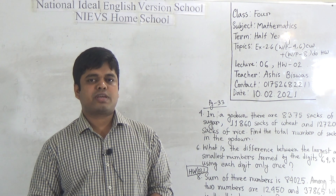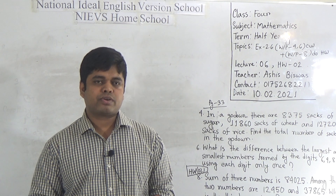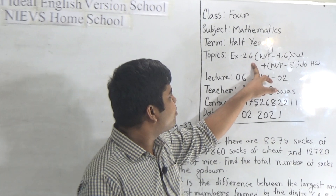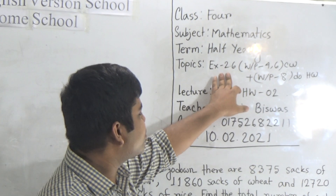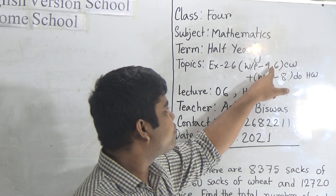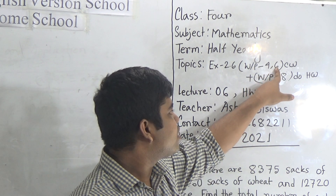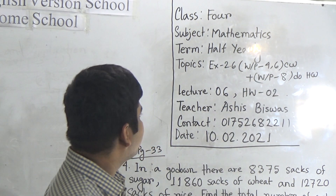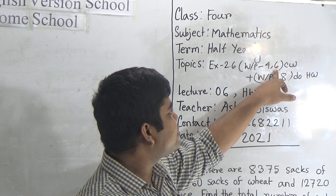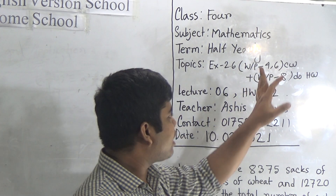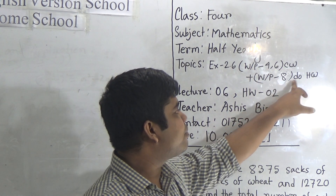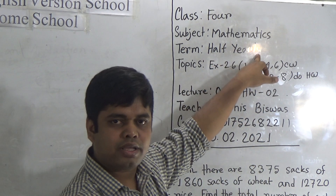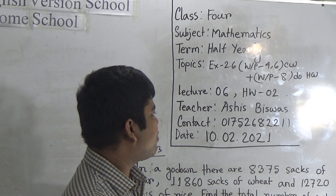Today, I am going to take a math class for the students of class 4. Our today's topic is exercise 2.6. From these topics, we shall solve odd problem number 4 and odd problem number 6. Quiz is taken from page number 33. Odd problem number 4 and 6 will be CW and odd problem number 8 will be your SW. Today is our lecture number 6 of half yearly and today's SW number 2.